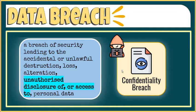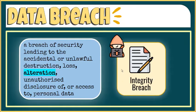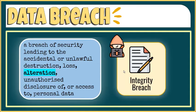Note that even unintentional disclosures qualify under this category. The second one is called integrity breach. This happens when there is an unauthorized alteration of personal data, which then renders its correctness, completeness, or reliability doubtful or even worthless. An example is when part of a digital file containing personal data becomes corrupted.